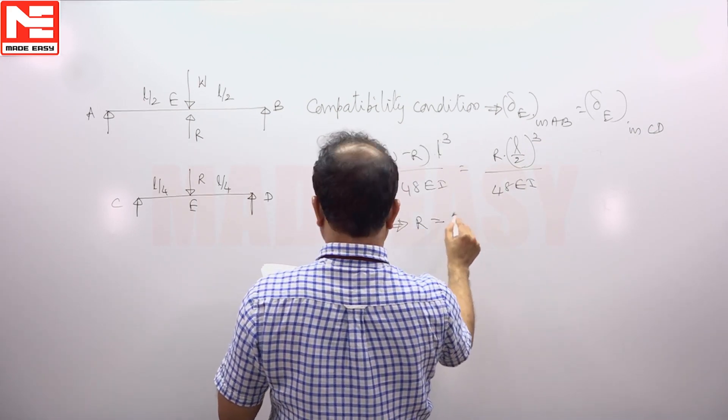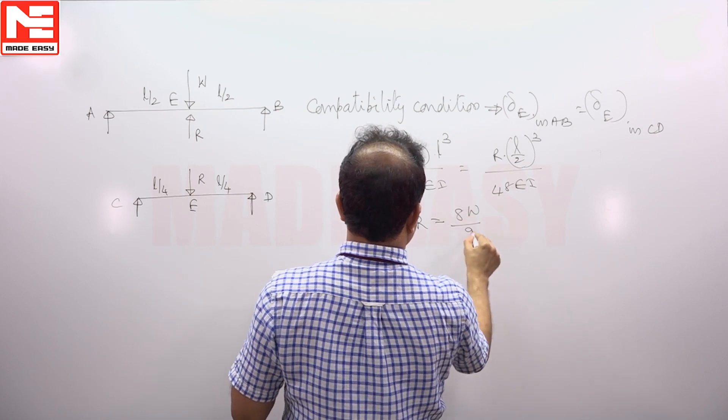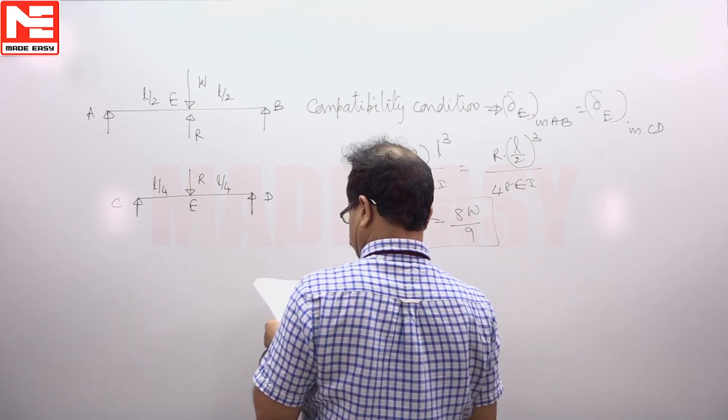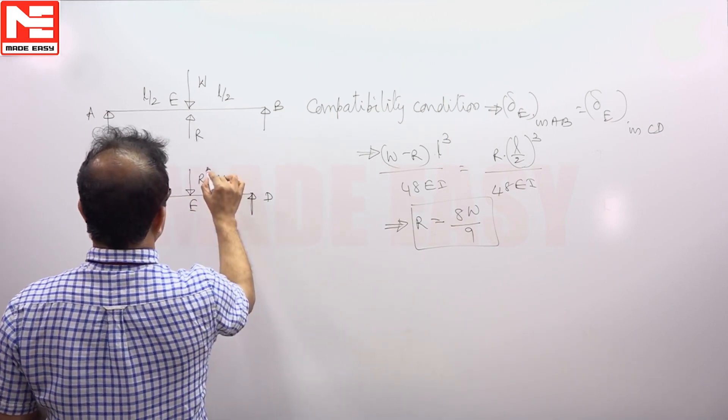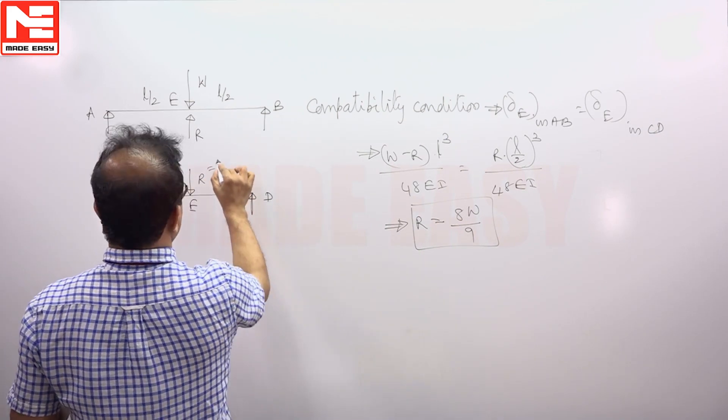So from this reaction R you will get 8W by 9. Then VAR if you know 8W by 9.